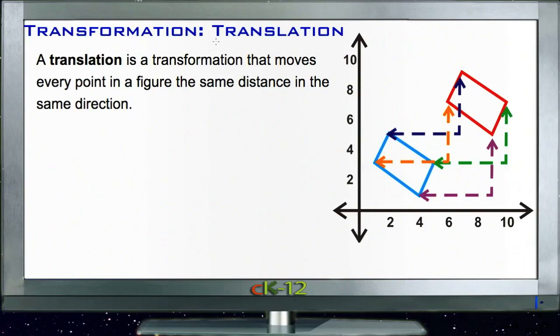The first of which is a translation, which is also sometimes called a slide. A transformation in general means we're going to take a figure like, say, this blue rectangle here and we're going to change it in some way. We're going to make it bigger, we're going to make it smaller, we're going to rotate it, we're going to flip it over one line or another.